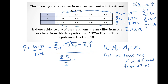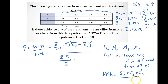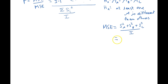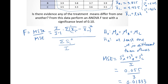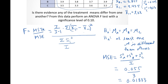Now that I've calculated the variances and individual means, calculating the MSE is straightforward. The mean squared error equals the sum of the variances divided by the number of treatments I. So that's S squared A plus S squared B plus S squared C, all divided by 3. That gives 0.055 divided by 3, which equals 0.01833. This is the denominator of our F test statistic.